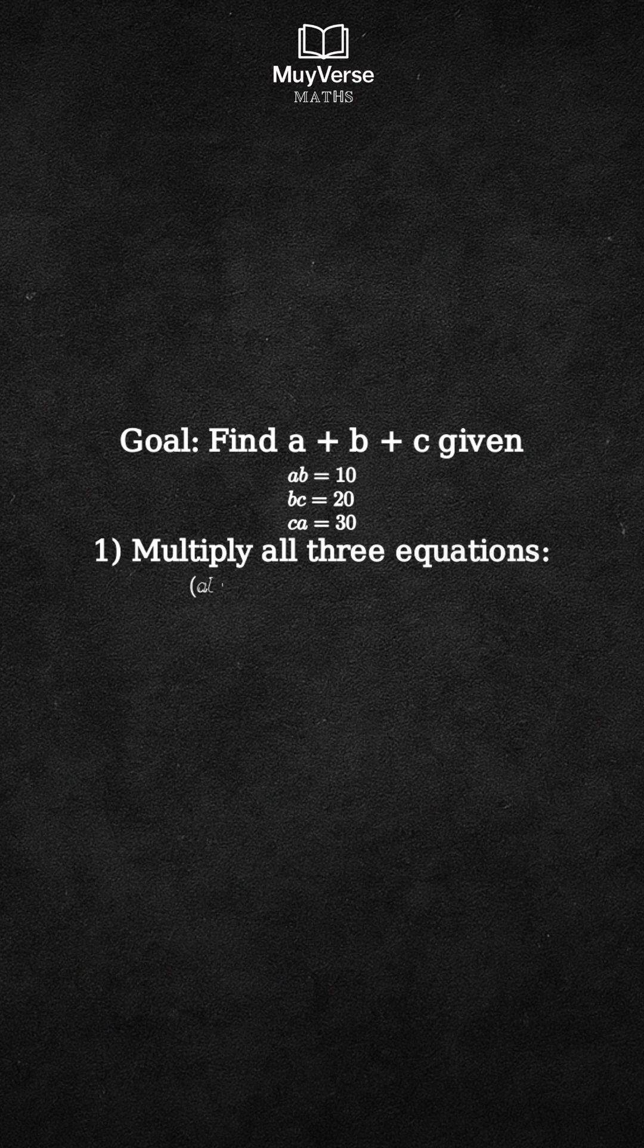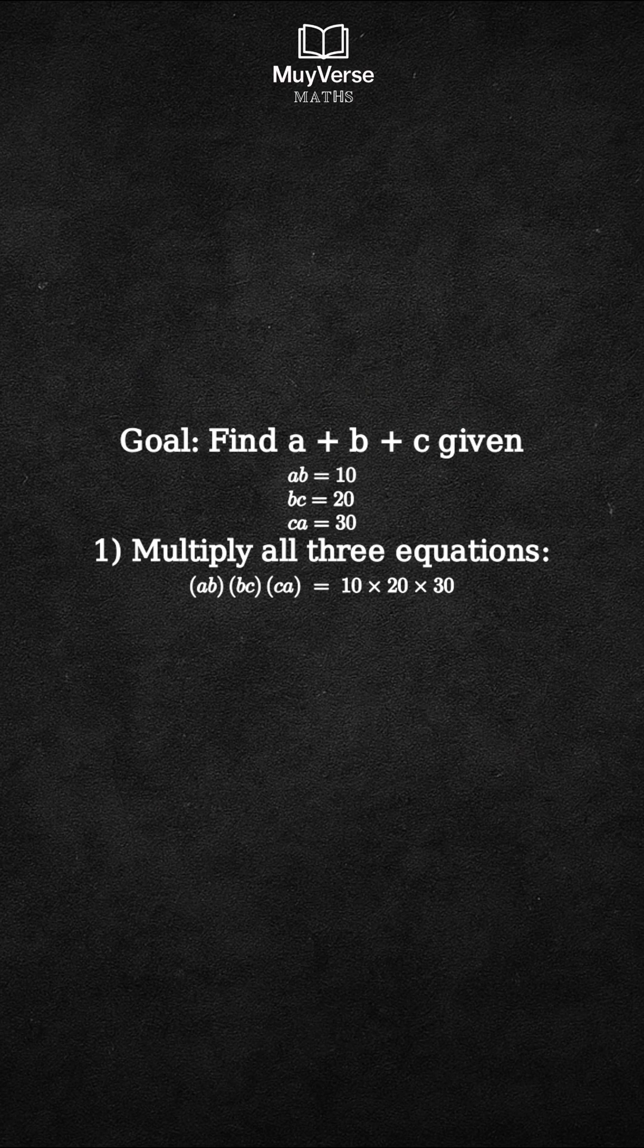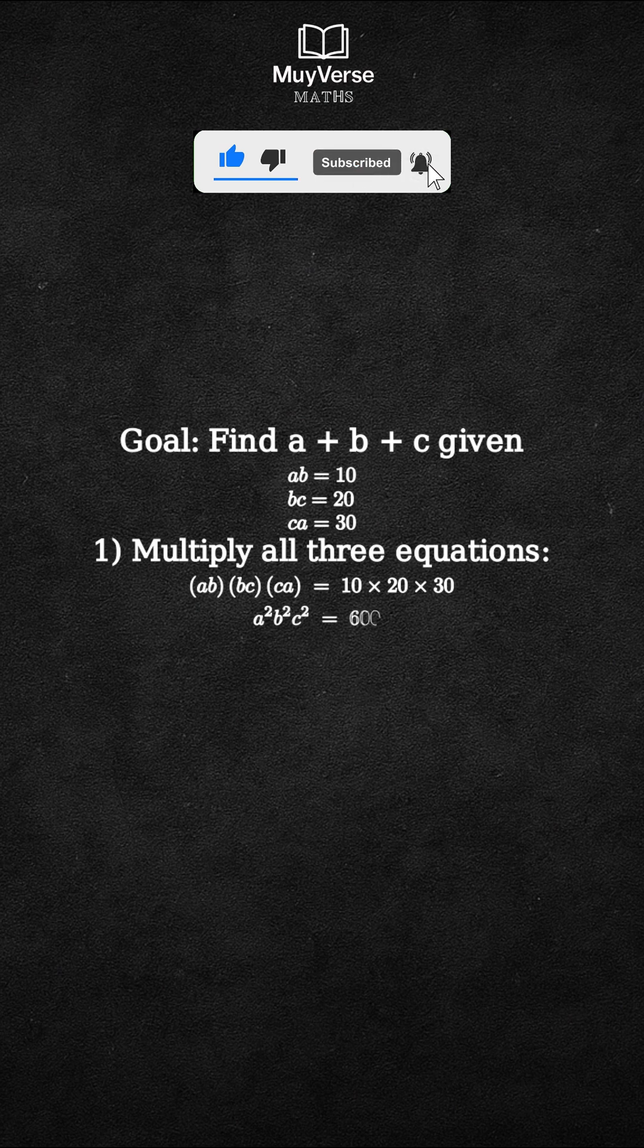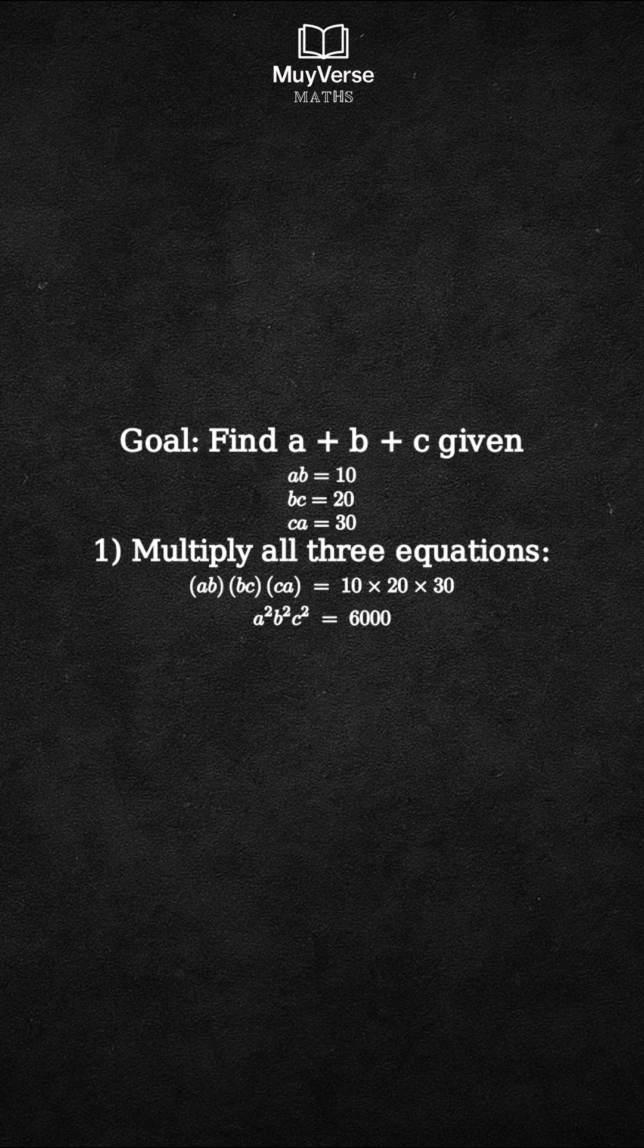Step 1. Multiply the three equations together. That is, open parenthesis ab close parenthesis times open parenthesis bc close parenthesis times open parenthesis ca close parenthesis equals 10 times 20 times 30. On the left side, ab times bc times ca equals a squared b squared c squared. On the right side, 10 times 20 times 30 equals 6,000.